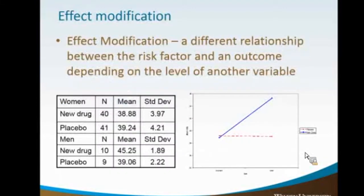You can also have effect modification — a different relationship between a risk factor, an outcome, and another variable. In a drug study looking at HDL cholesterol, when broken down by gender, there's a notable difference between men and women in how they responded to the drug. That's an example where a variable isn't confounding the relationship — it's actually adding to it, almost becoming a multiplier of the relationship.